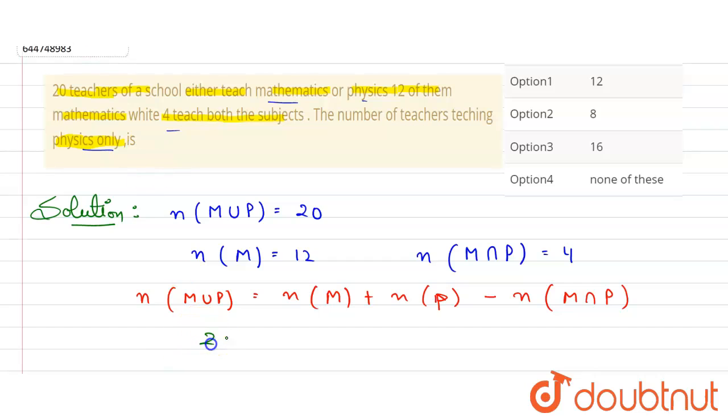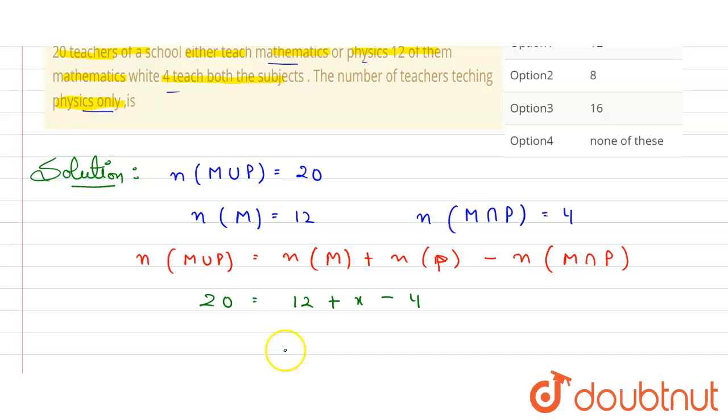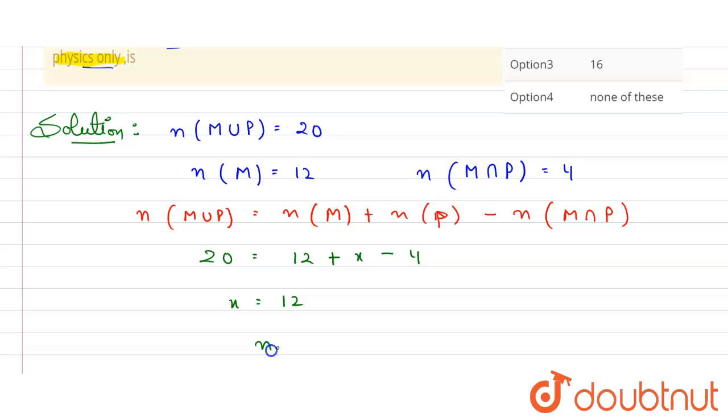So what we'll do here, put the values here back. Union is 20, number of teachers of mathematics is 12, physics we need to find so let it as x, minus 4 is the common teacher. So from here, value of x, it will be 12 minus 4 is 8, and 20 minus 8 will be 12. So what is 12? 12 is the number of teachers of physics.